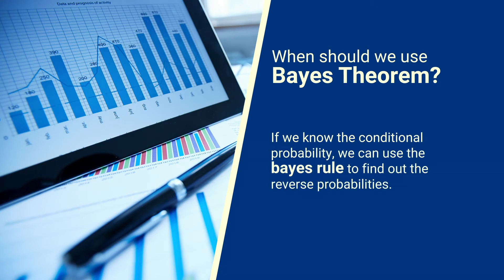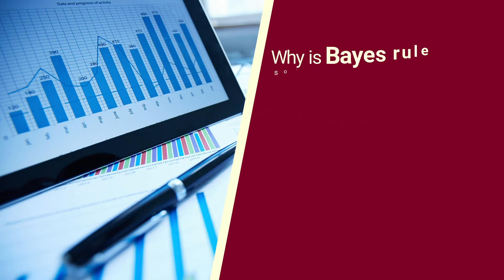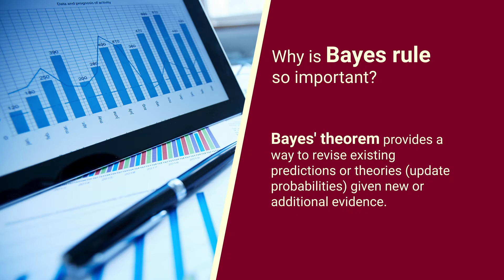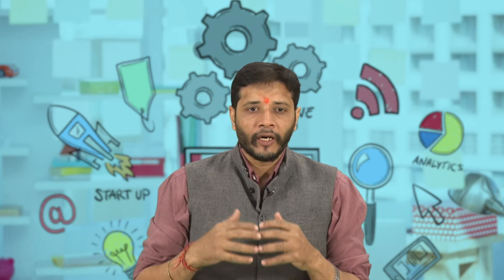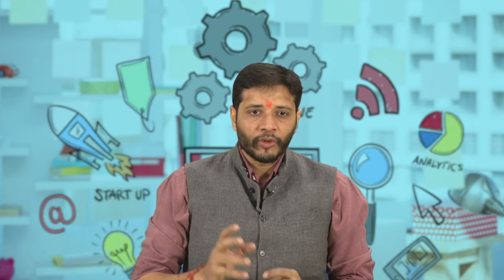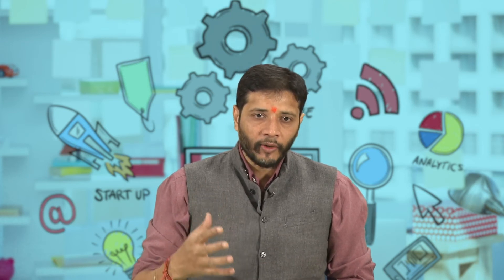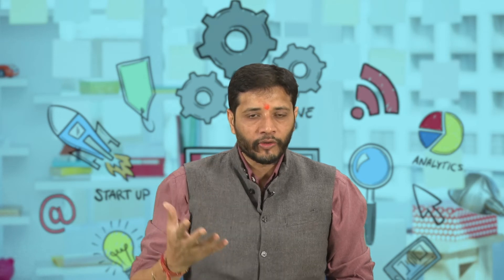If we know the conditional probability, we can use Bayes' rule to find out the reverse probabilities. Bayes' theorem provides a way to revise existing predictions or theories and update probabilities given new or additional evidence. In finance, Bayes' theorem can be used to rate the risk of lending money to potential borrowers. This course — MCO3 Research Methodology and Statistical Analysis — is for commerce postgraduate students, and this financial aspect makes Bayes' theorem quite useful for learners pursuing their Master of Commerce.